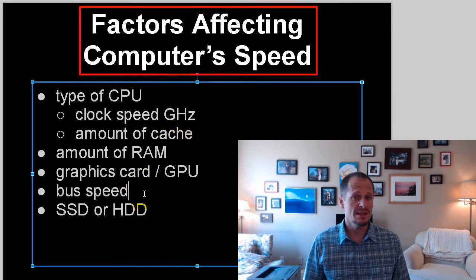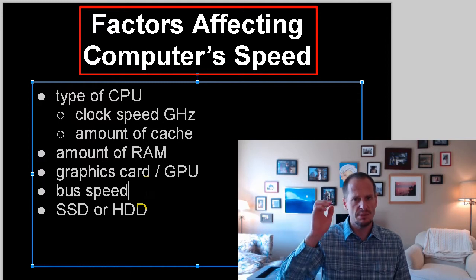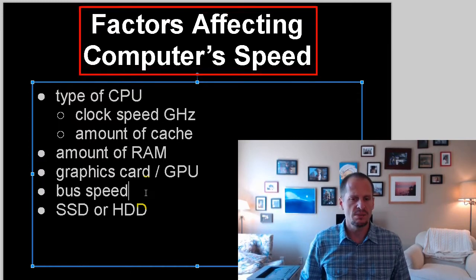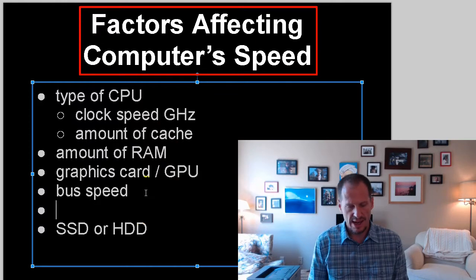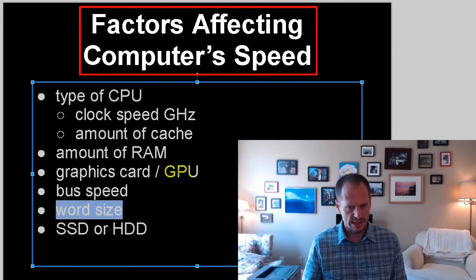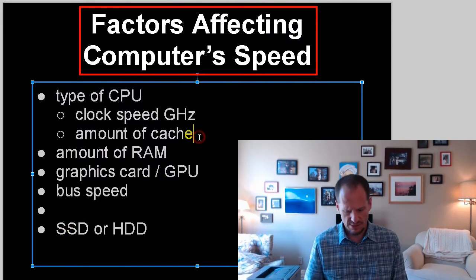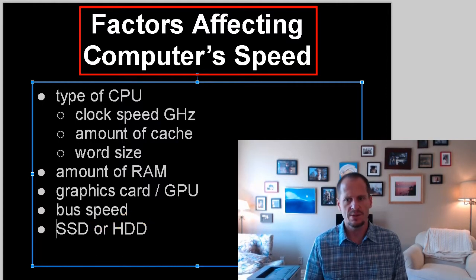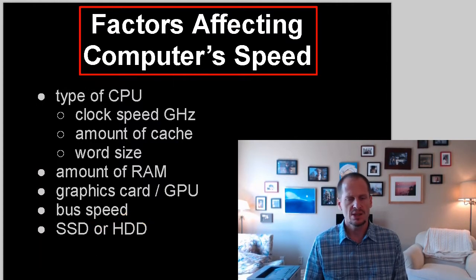And then the buses. Buses are limited by how many zeros and ones can be carried on a bus. The more that can be carried on a bus, the better — and how fast can they be carried. And also the word size: how many zeros and ones can the CPU handle at one time? So these are all factors that affect computer speed.